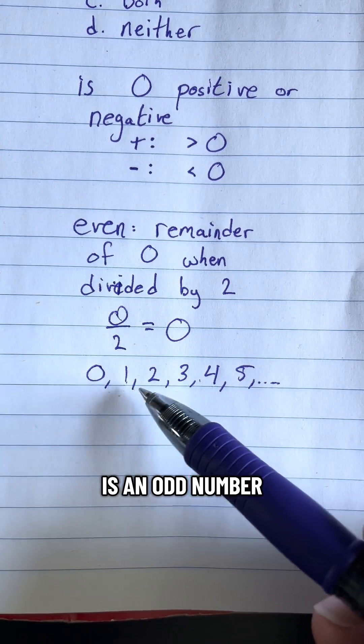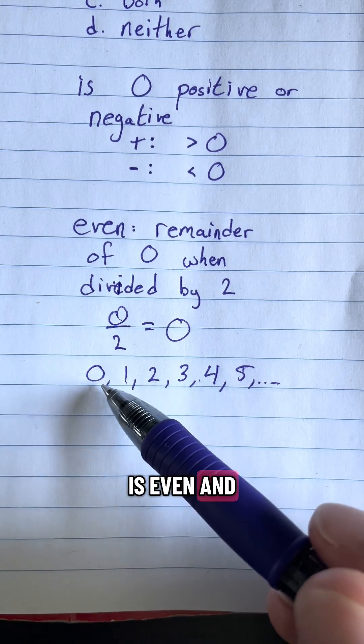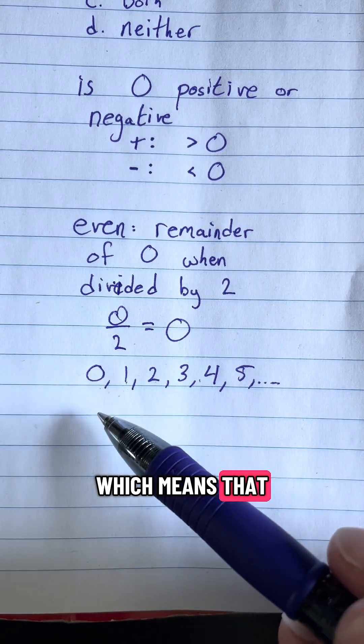Because look, one is an odd number, which means that two, which is next to one, is even. And zero is next to one, which means that zero must be even.